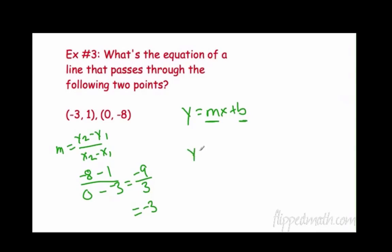So now I have my m. I'm going to plug it in. Y equals negative 3x. Okay. So let's take a look. Our b value. Remember, our b value is whenever the x equals 0. It's our y value. So here it is, negative 8. So y equals negative 3x minus 8. Very good.